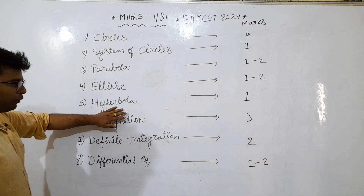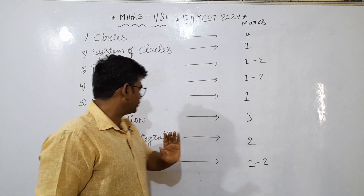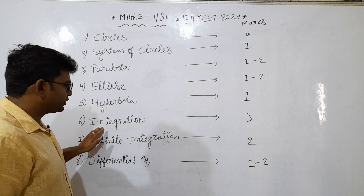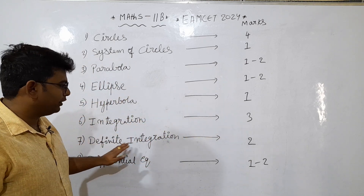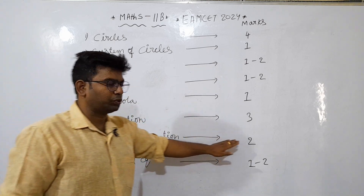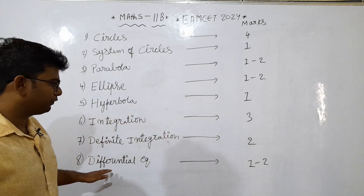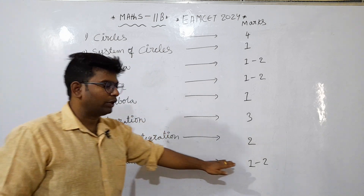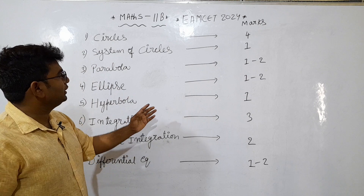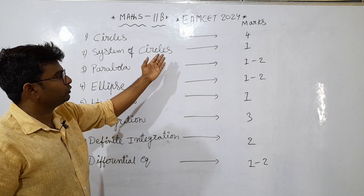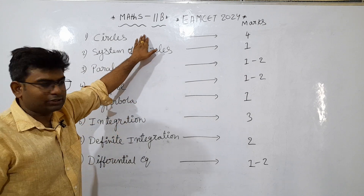So next, from hyperbola, one question is expected. From integration, 3 questions are expected. From definite integration, 2 questions are expected. From differential equations, 1 to 2 questions can easily be expected. So, this is the Math 2024 weightage.